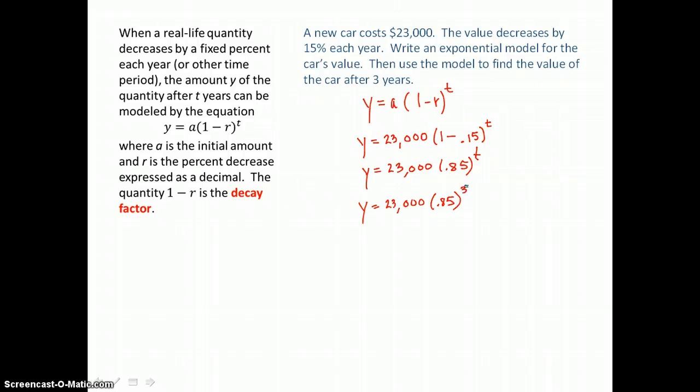So this vehicle is losing 15% of its value each year, but it's keeping 85% of its value each year. So all we have to do now is substitute 3 in for t to find its value after 3 years. And use our calculator. 0.85 raised to the third power first, and then multiply by 23,000. So I'm getting a value for this vehicle, after 3 years, of only $14,124.88.